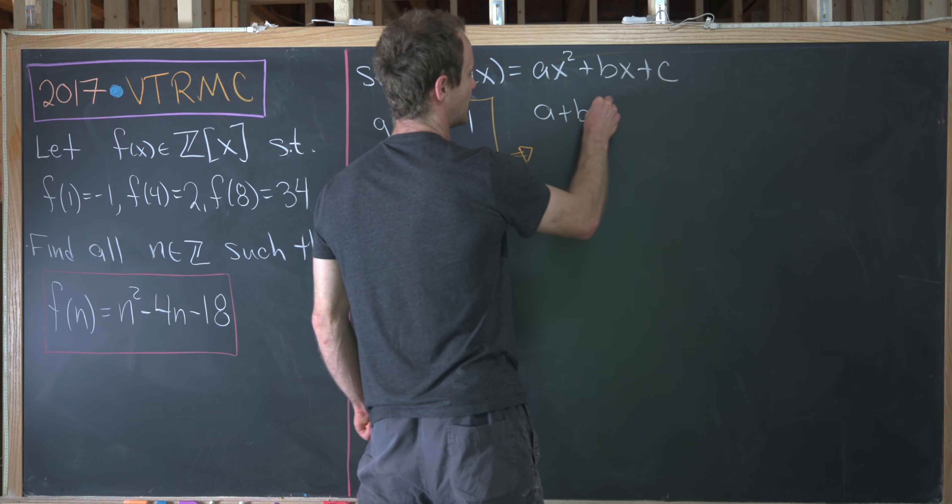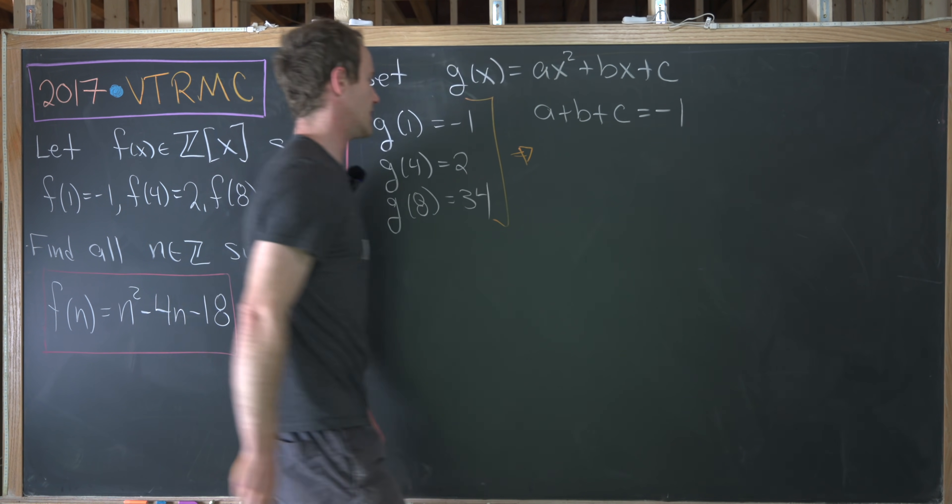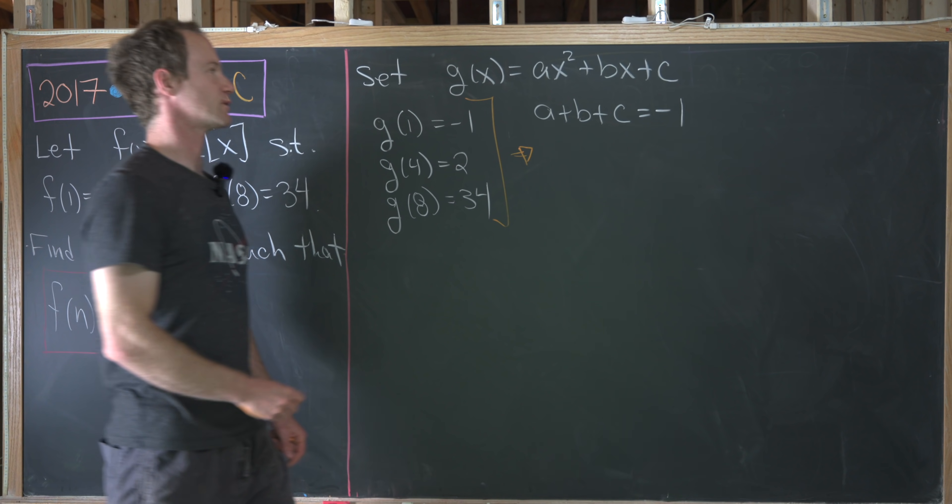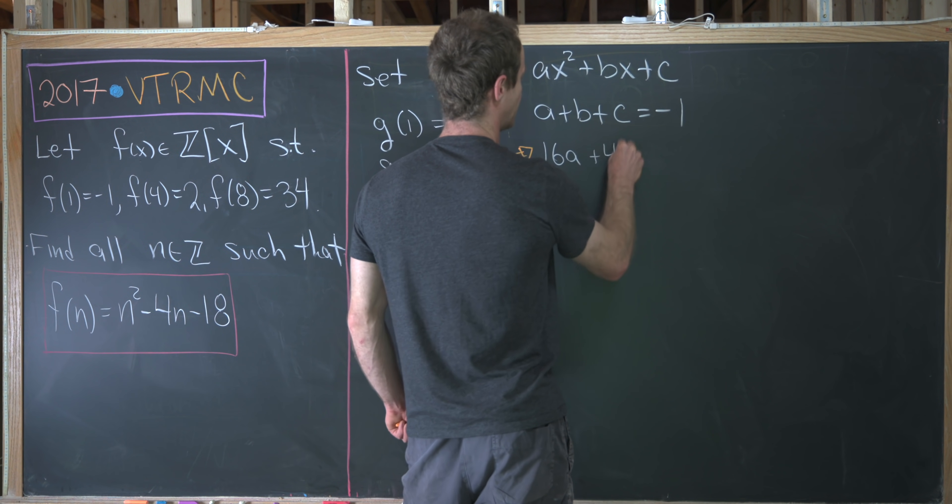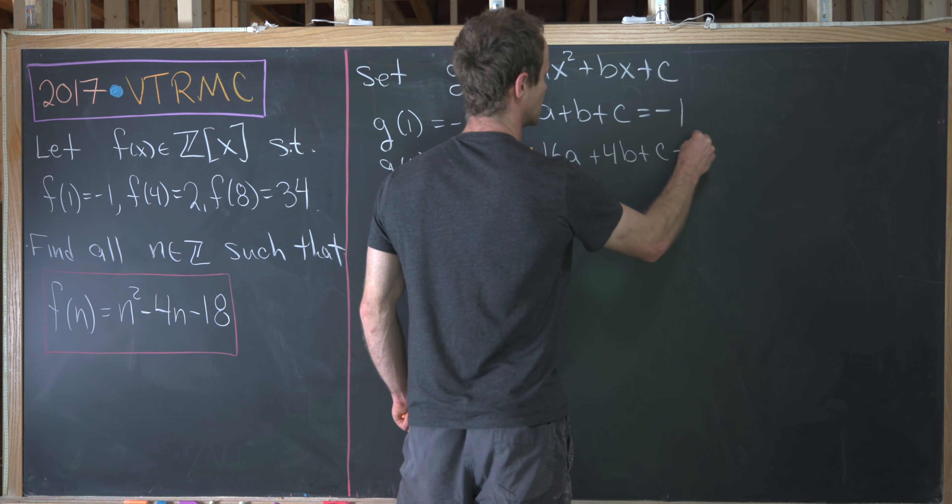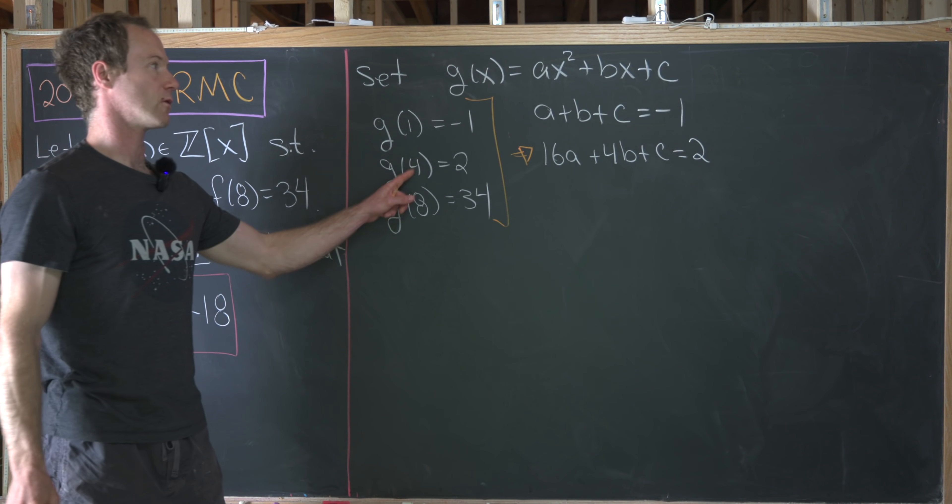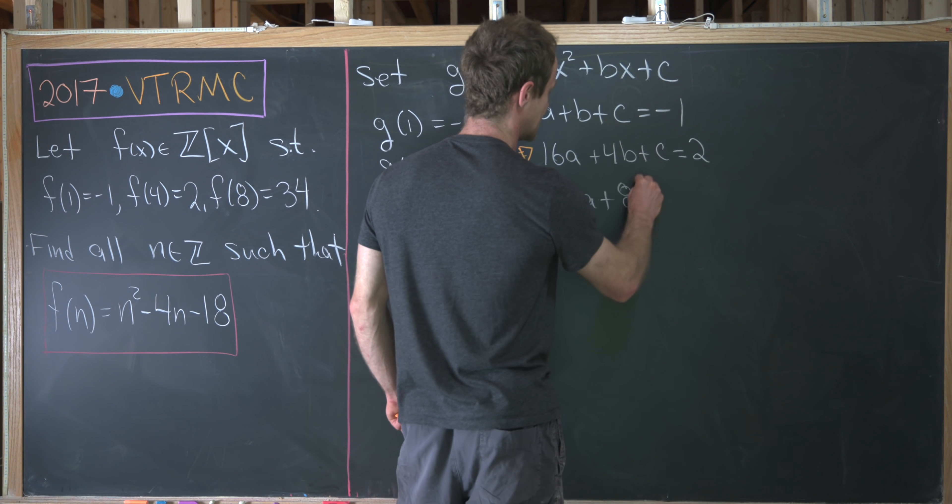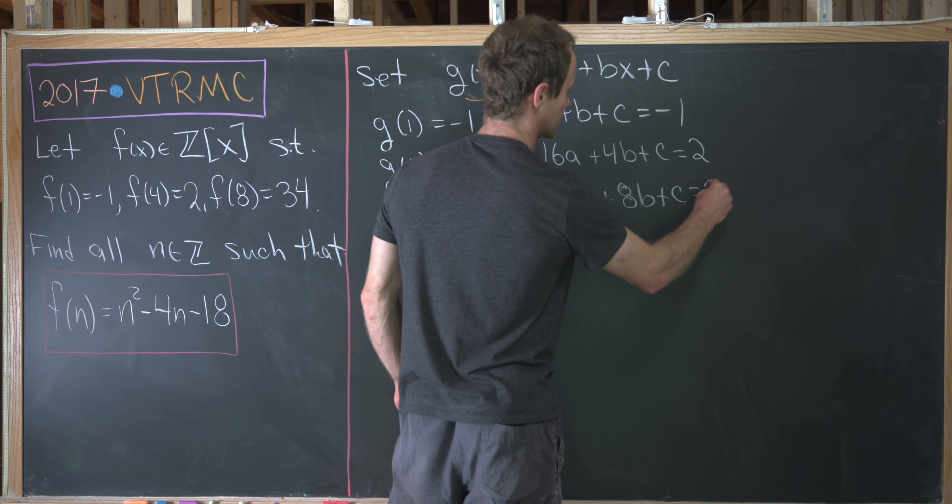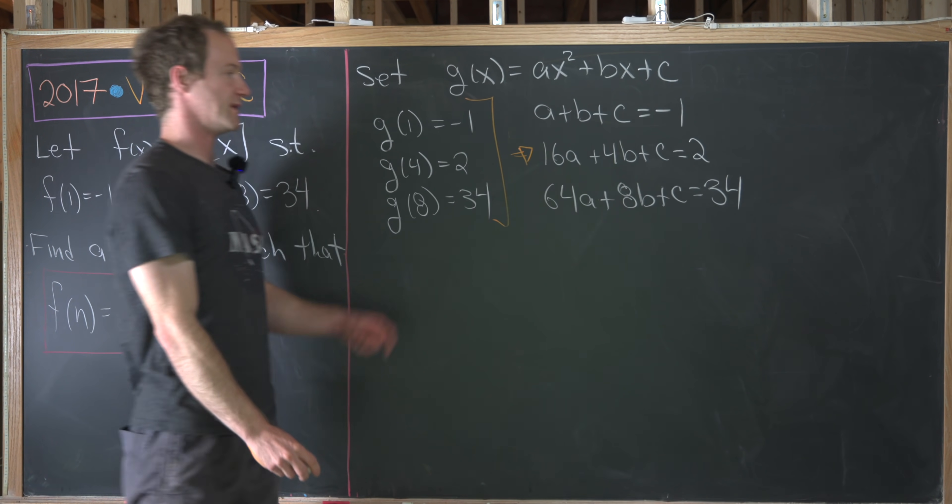Notice we have a plus b plus c equals negative 1 from plugging in x equals 1. We have 16a plus 4b plus c equals 2, plugging 4 in for x. And then finally we have 64a plus 8b plus c equals 34 from this one right here.